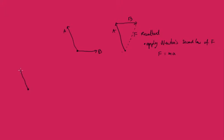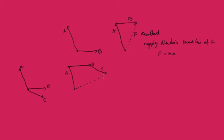We can also have situations with three or more forces — say A in one direction, B here, and C here. We can draw the forces and find the resultant: we place vector A, then B comes along, then C comes along parallel, and we get the resultant force F from our starting point.